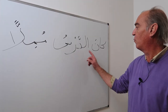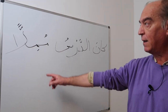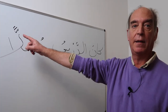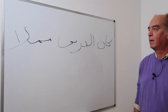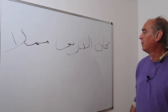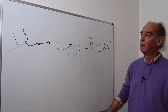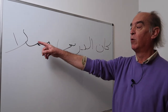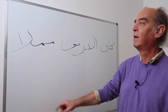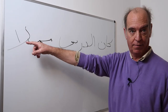For example: 'The lesson was boring.' Remember that the khabar kana is always in the accusative case. This is our sentence without vowels: kana ad-darsu. And you have to know the word mumil, which means boring. You understand that it is in the accusative because of the alif.